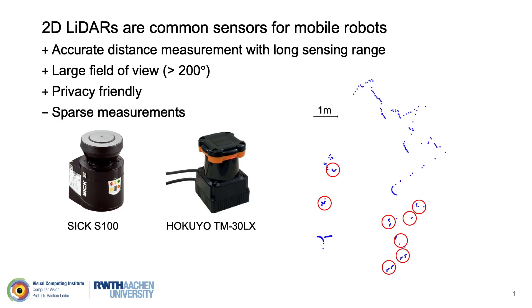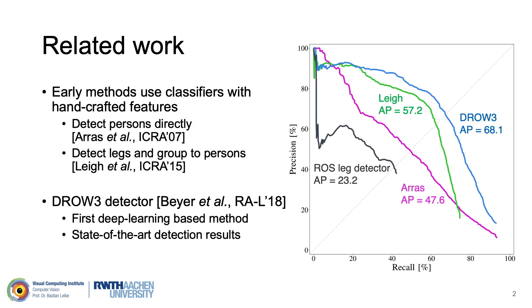However, the range measurements obtained from 2D LiDARs are sparse and have low information content. The sparsity makes person detection very challenging, as can be seen in this LiDAR scan. Early developments in the field use classifiers in combination with handcrafted features. There are two groups of approaches: one detects persons directly, and the other detects legs and uses heuristics to group them into persons. These early approaches typically only work well with simple scenarios.